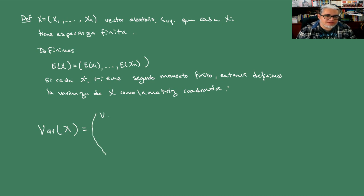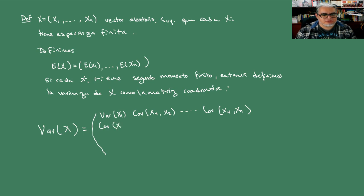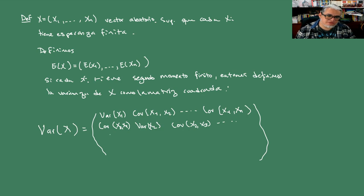En el primer renglón vamos a tener el vector de varianzas. La varianza en la diagonal: varianza de x1, luego covarianza de x1 con x2, covarianza de x1 hasta xn. Aquí vamos a empezar con la covarianza de x2, 1, la varianza de x2, luego la covarianza de x2 con x3, y así. El último elemento abajo es la covarianza de xn con x1. En la diagonal tenemos las varianzas.